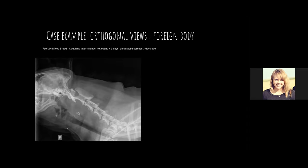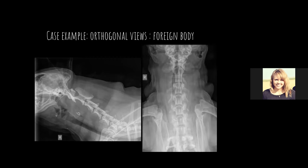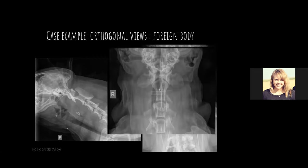Another foreign body case: a seven-year-old male mixed breed was coughing intermittently and not eating for three days — and he ate a rabbit carcass. Dorsal to the trachea where the esophagus lives, there was a small bone fragment. It looks pretty small on one view — it looks like the dog should be able to pass it — until we get the other orthogonal view. Zoomed in, it's actually very large and very sharp, with razor-sharp margins not visible on the first view. This dog absolutely could not go home without intervention.